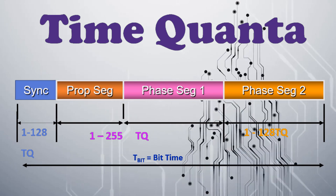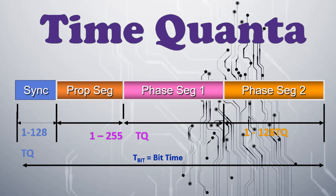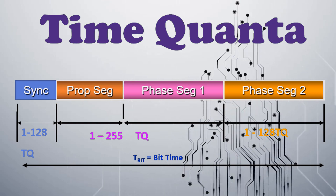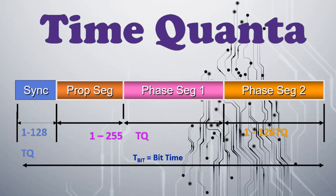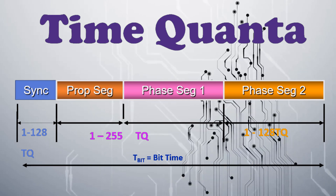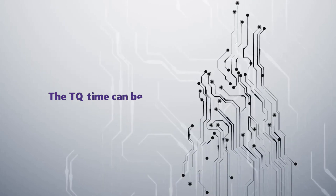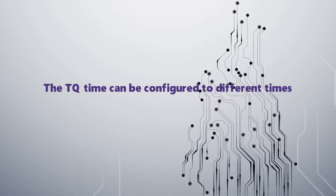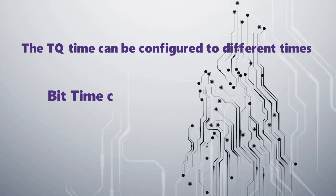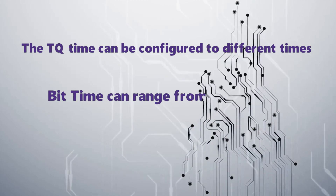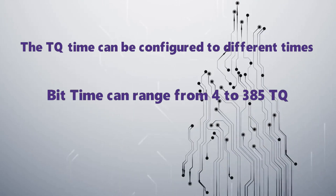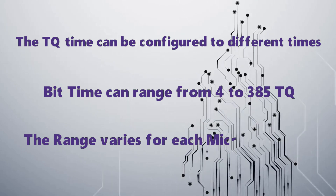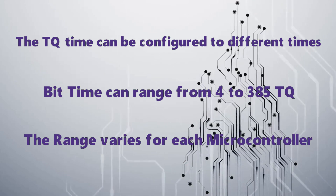The sync segment can vary from 1 to 2 time quantas. The propagation and phase segment can vary from 1 to 4 time quantas. Phase segment 2 can vary from 1 to 5 time quantas. The time quanta TQ can be configured to different times, and bit time can range from 4 to 385 time quantas. The range varies for each microcontroller.